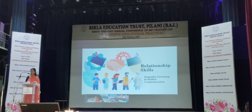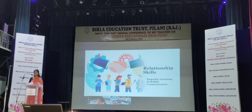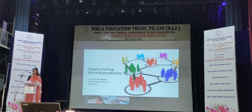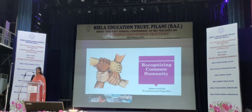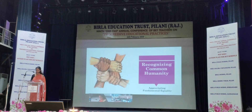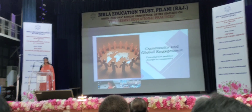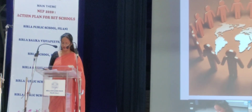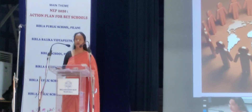Component 6: Relationship Skills — empathic listening, skillful communication, and conflict transformation. Component 7: Appreciating Interdependence — understanding interdependent systems and individuals within a system context. Component 8: Recognizing Common Humanity — appreciating the fundamental equality of all and how systems affect our well-being. Component 9: Community and Global Engagement — exploring one's potential for effecting positive change in community and work, engaging in community and global solutions.